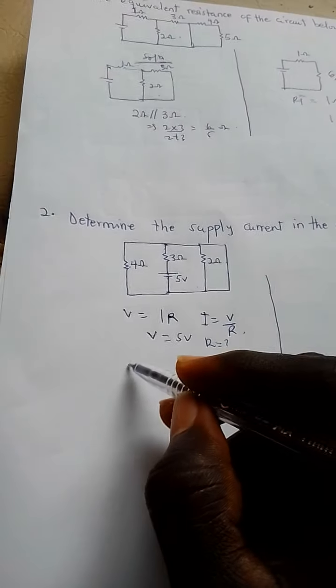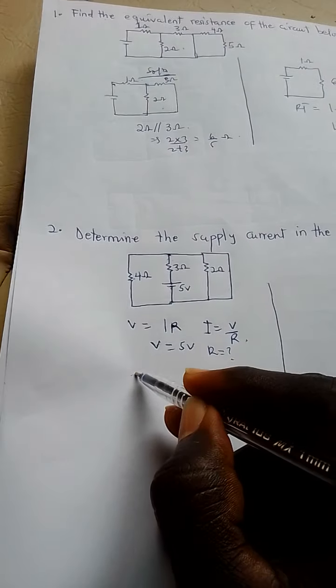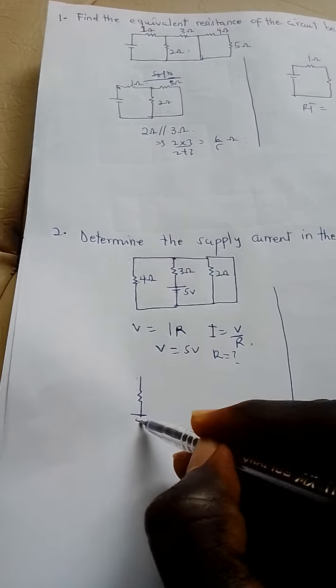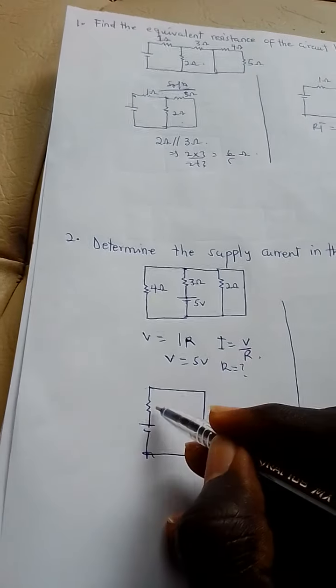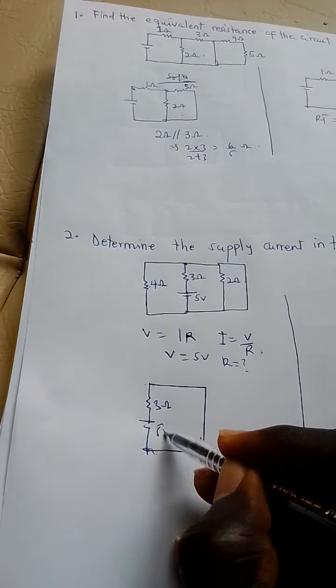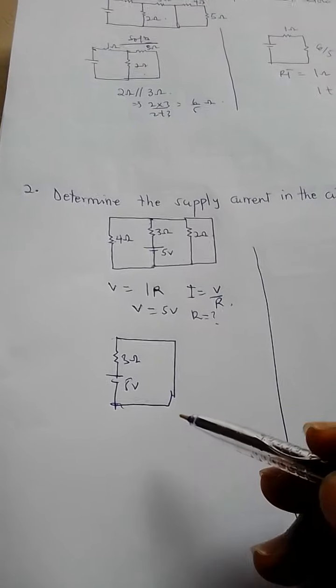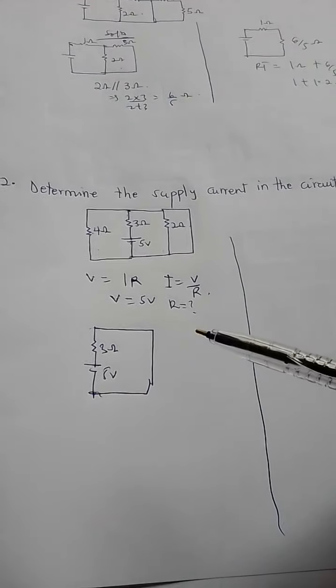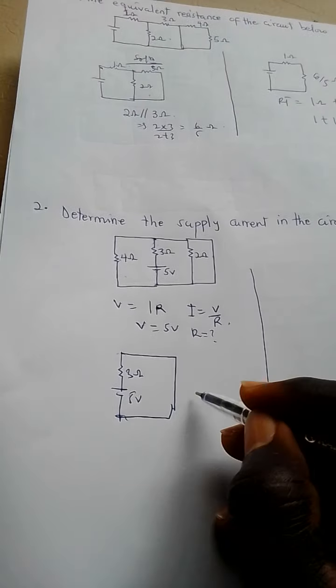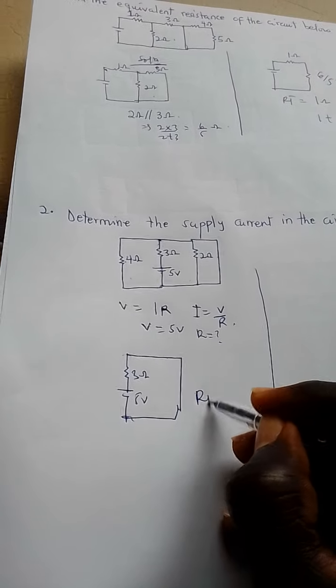For that reason, the effective circuit or the active circuit is going to be our 3 ohm to the source, then to the short circuit, then back to the source. Our 3 ohms like this. So this is actually the active circuit. These 4 ohm and the 2 ohm are not actually working.